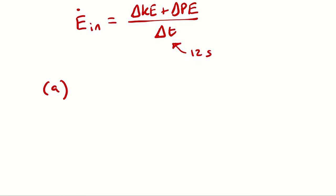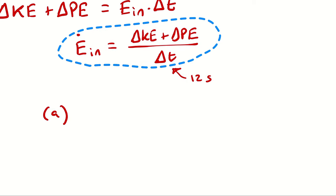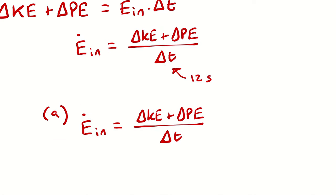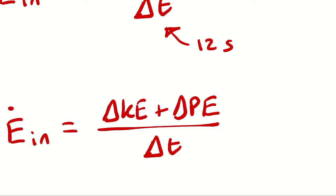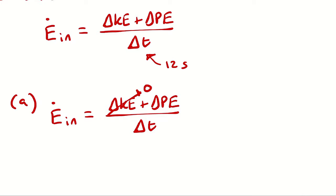Let's begin with part A, where we are climbing the hill at constant velocity. The cruise control is locked — velocity isn't changing, whatever it is at state 1 it still is at state 2. So E-dot-in equals delta KE plus delta PE divided by 12 seconds, which simplifies down to just the change in potential energy divided by the duration. It's not that there is no kinetic energy — it's just that it doesn't change.